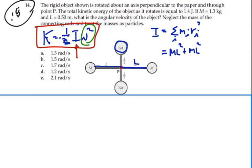We have a 2M located at a distance L divided by 2 away, so we'll have a 2M with an L divided by 2 squared. And then we have another 2M, and that's a distance L divided by 2 squared as well.